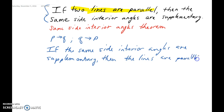In this section, we are no longer going to be given that the lines are parallel — we are going to be proving that they're parallel. We're going to be looking for the relationships: are corresponding angles equal? Are alternate exterior angles equal? Are alternate interior angles equal? And are same side interior angles supplementary? If they are, then we can make the conclusion that the lines are parallel.